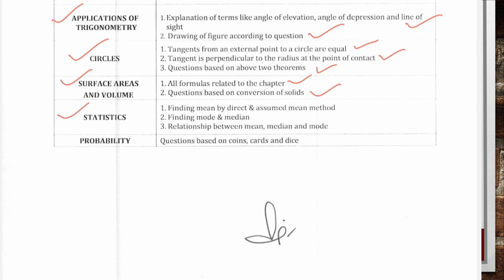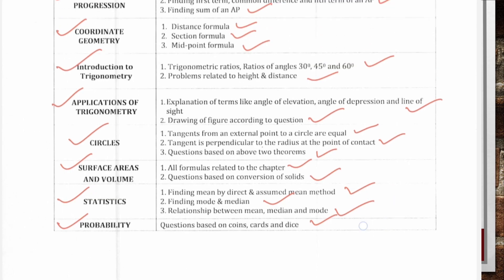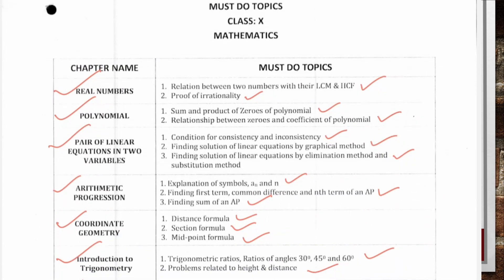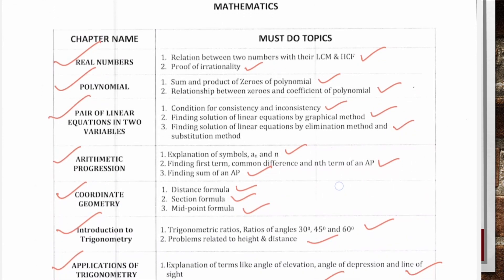From chapter Statistics, three topics: finding mean by direct and assumed mean method; finding mode and median; and relationship between mean, median and mode. Last chapter, Probability: questions based on coin, cards and dice. So these are the must-do topics for Mathematics.